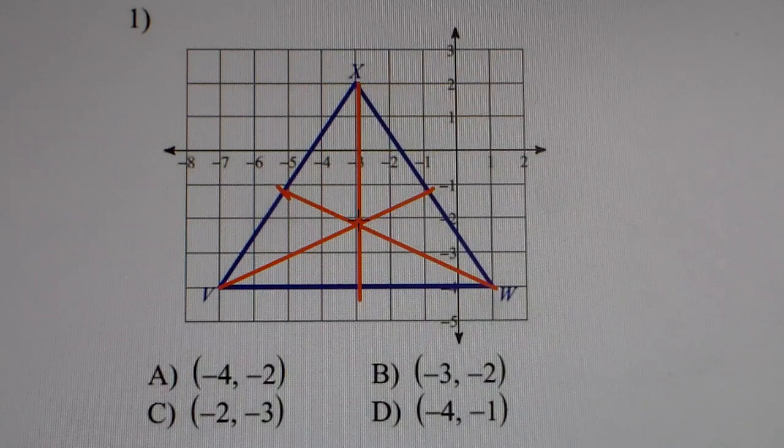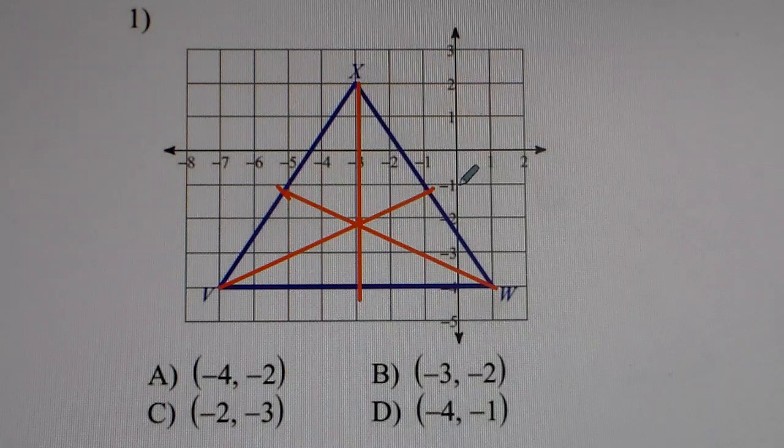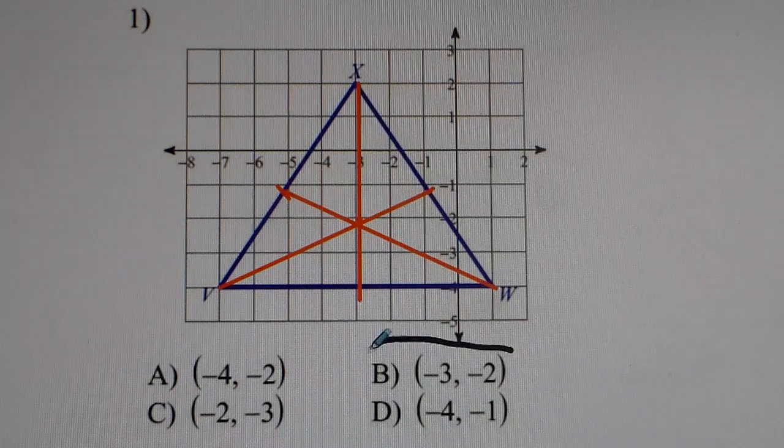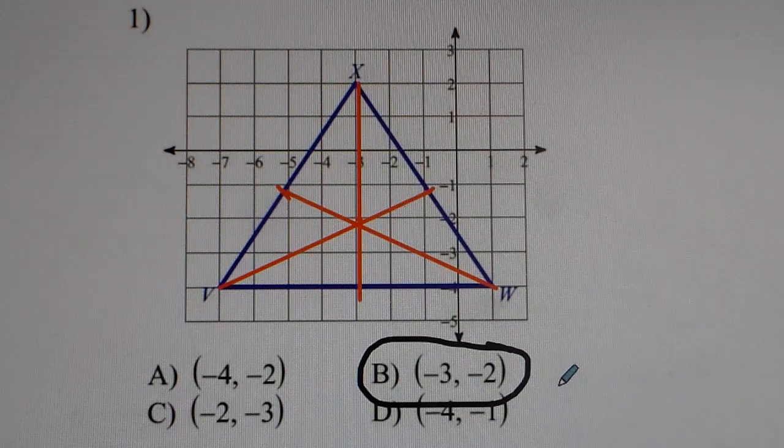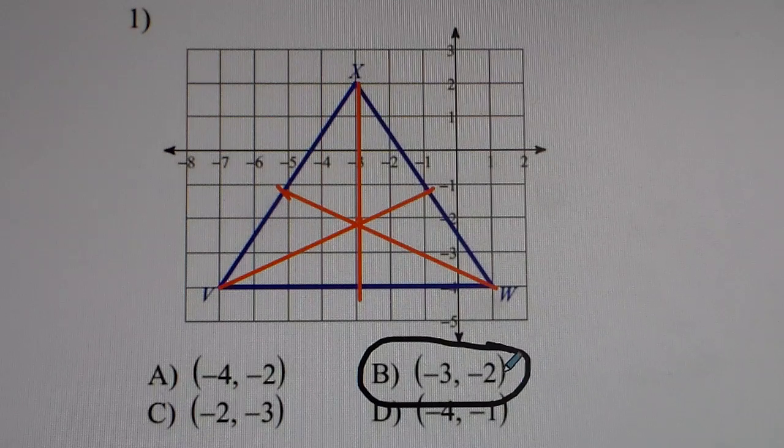Three to the left, two down. So my answer for this particular problem is B, negative three, negative two. That is the centroid.